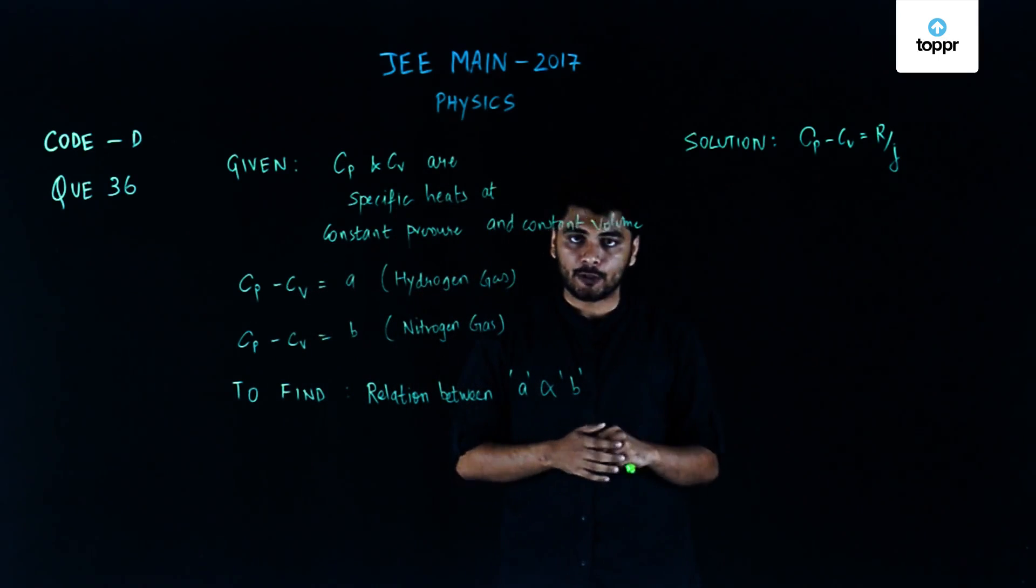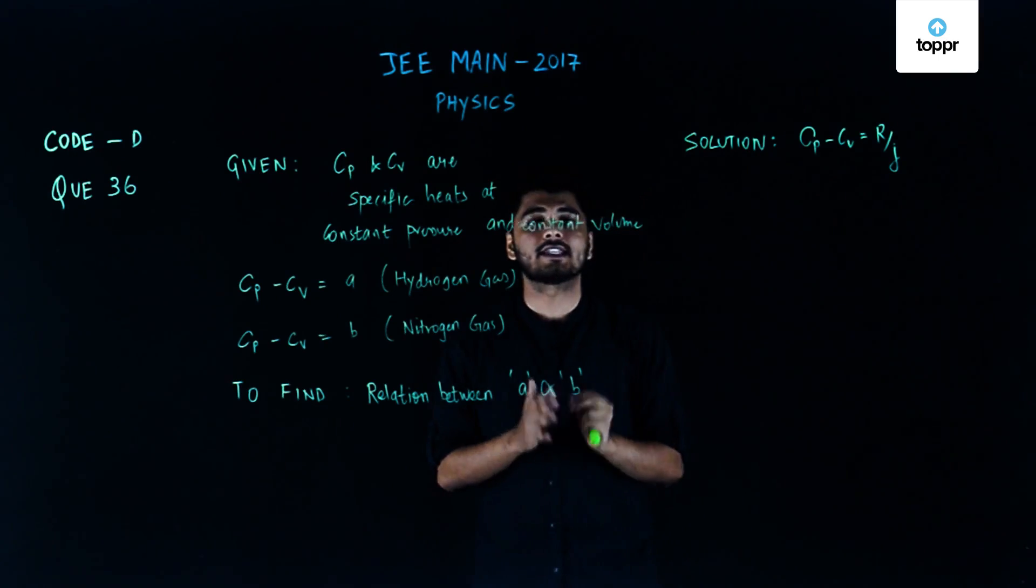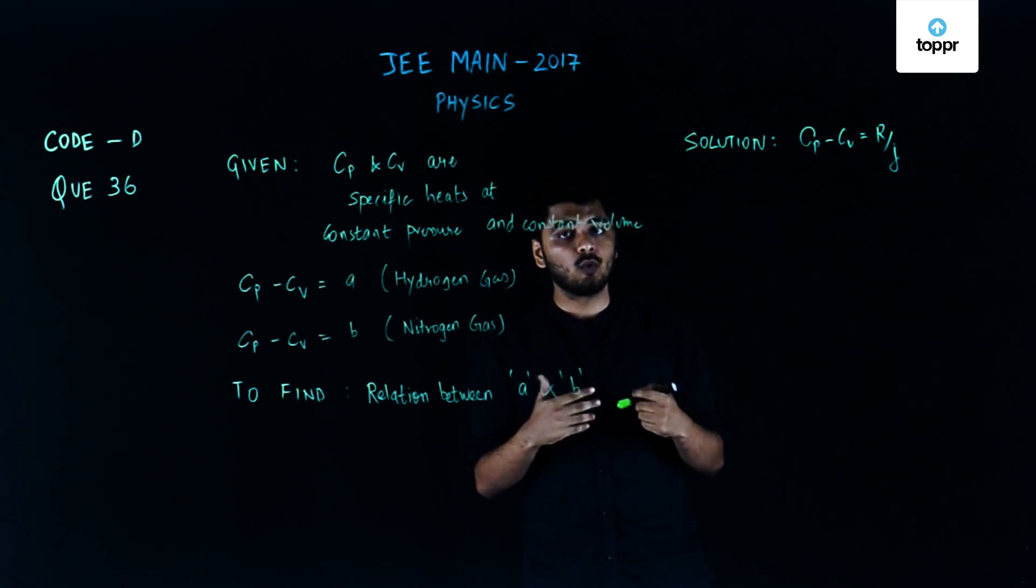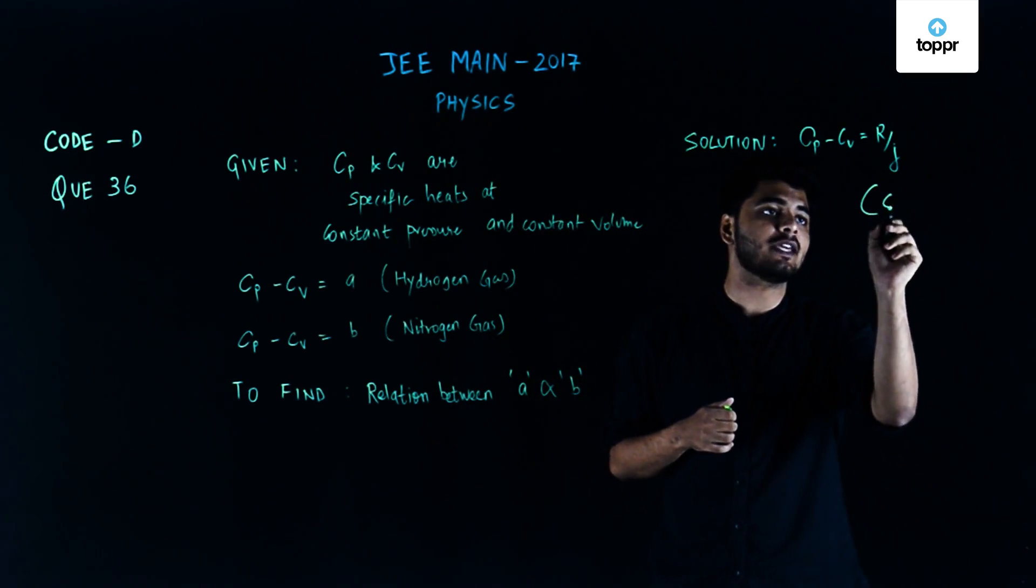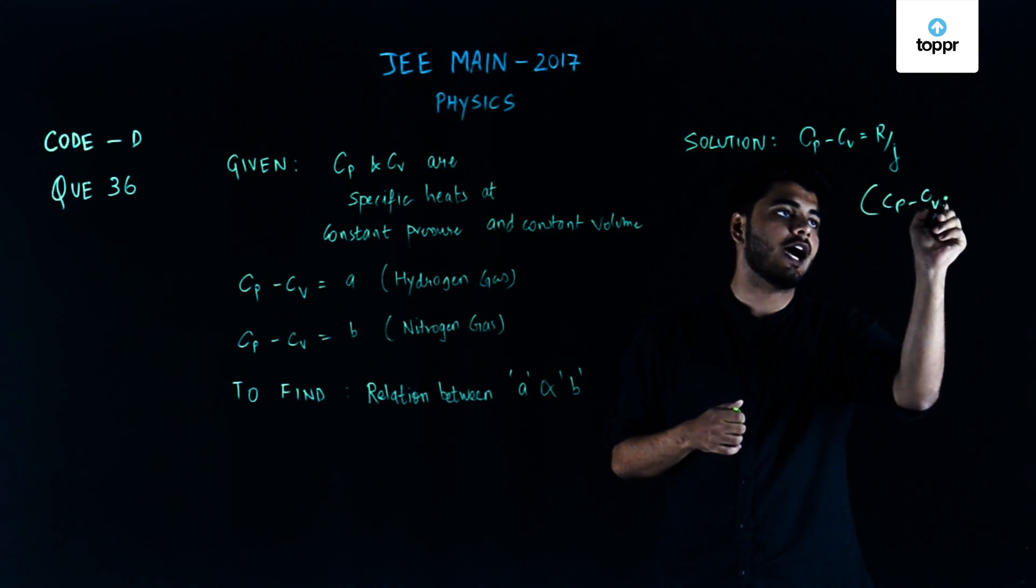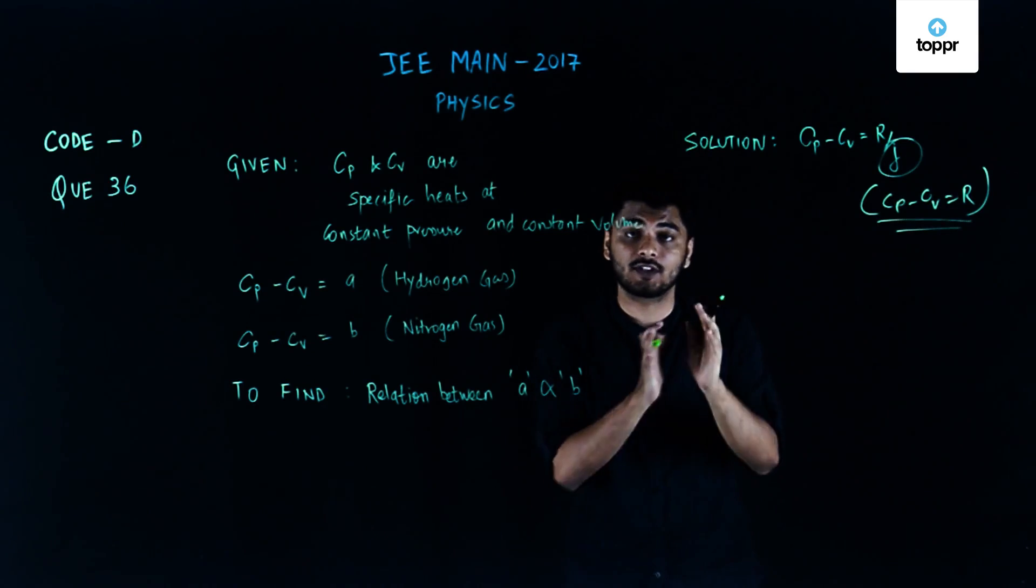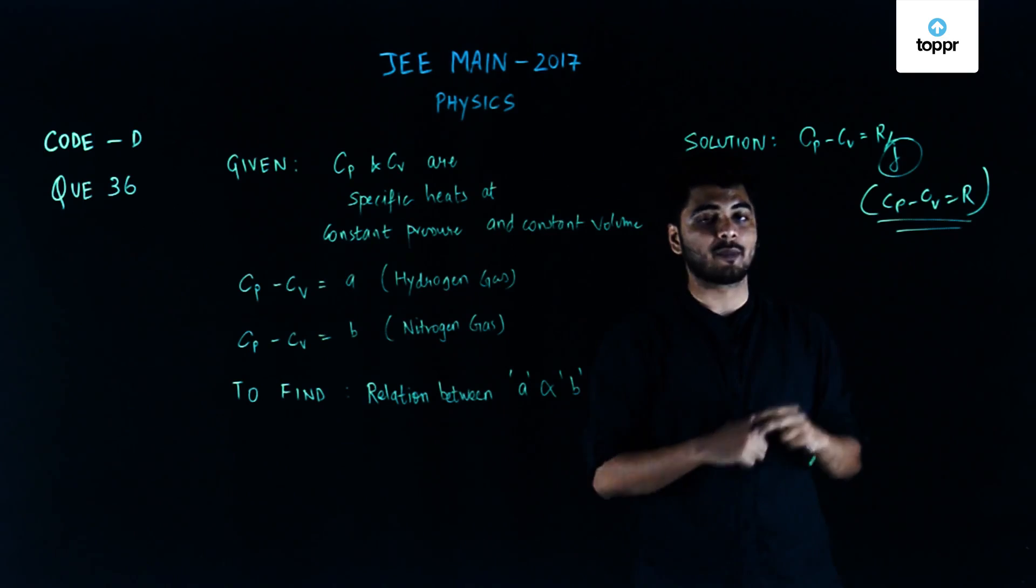The formula we are going to use for this solution is Cp minus Cv equals R by J. The most common mistake when solving this type of question is that we take Cp minus Cv equals R and miss out on the term J, because this is what we have been doing in previous questions related to such topics.